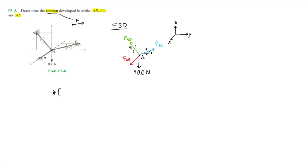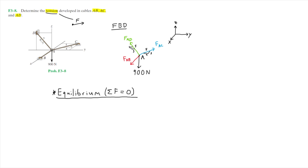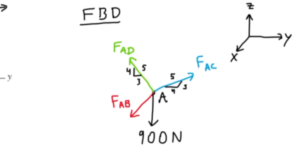Now that we have our free body diagram we are ready to perform our equilibrium, which means setting the sum of forces equal to zero. Let's start with the sum of forces along the x direction, where we can set the direction that points towards us as the positive x direction.